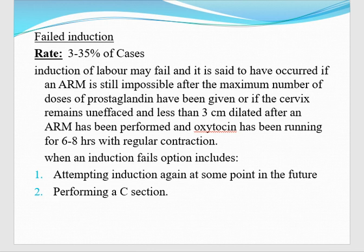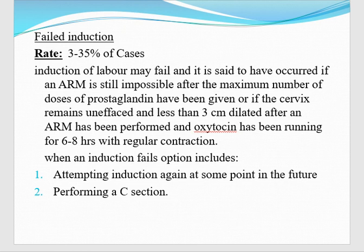Failed induction. Failed induction is when, in case of prostaglandin E2, you use 2 pessaries 6 hourly but the patient still does not go into labor. The rate is 3 to 35% of cases. Induction of labor is said to have failed if ARM is still impossible — meaning the cervix is not dilated — after the maximum number of doses of prostaglandin E2. Also when the cervix is 3 cm dilated, ARM has been done, and oxytocin has been going for 6 to 8 hours but there is still no cervical dilation — only contractions. When induction fails, options are attempting induction again in the future or performing cesarean section.